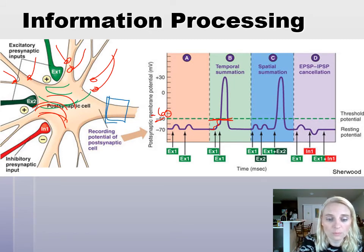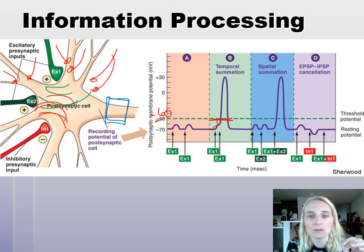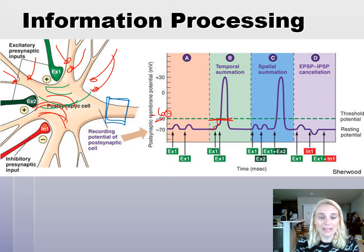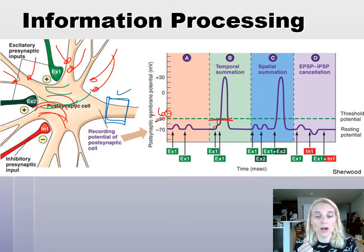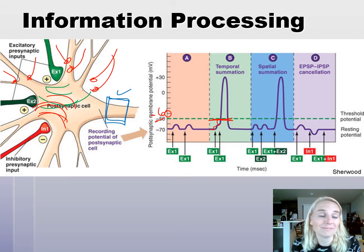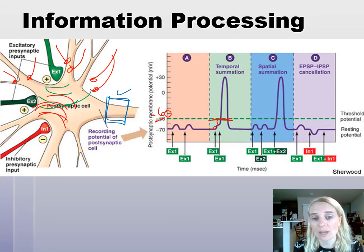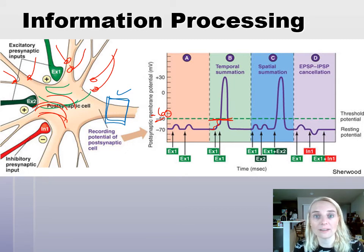It is all about bringing that initial segment to threshold. If you get 200,000 signals coming in and they cancel each other out, that cell is not going to fire. If the majority are excitatory, then yes — we've checked the box, we've met threshold, and we're going to fire. It's kind of weird to think about: your neural processing is all about bringing the initial segment to threshold — it takes the magic away from thought and thinking.